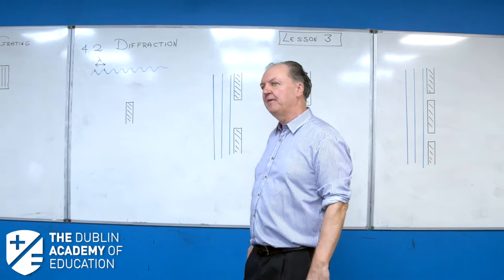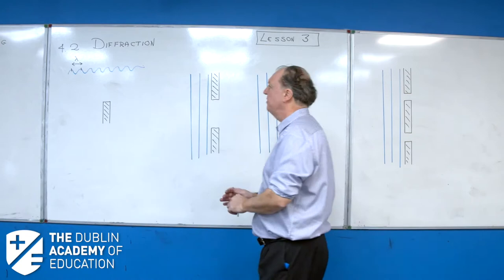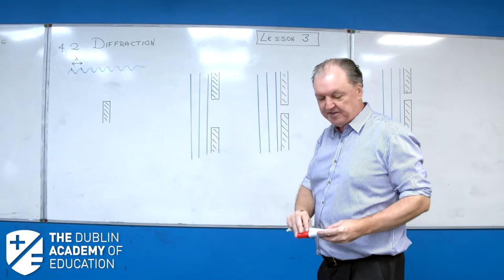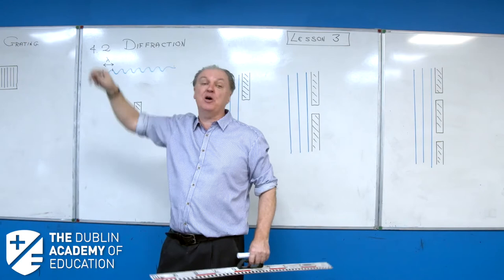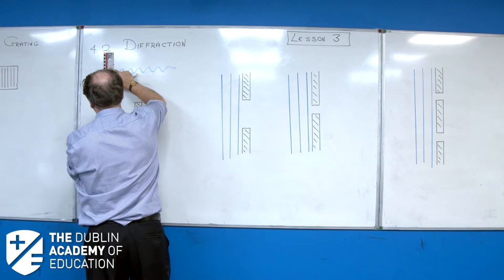Let me explain diffraction. There's a wave — it could be a water wave, a light wave, or a sound wave. The wavelength is the distance from crest to crest. Now let me display that wave differently. Imagine I'm in a helicopter looking down on top of that wave — I'm going to see the tops of the waves, the crests. I'll draw the crests going like that.